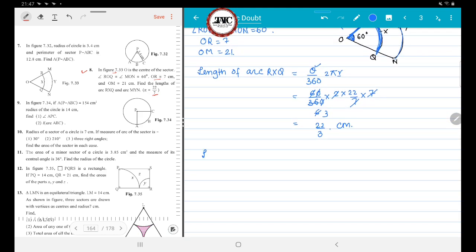Now let us see for the next part, that is length of arc MYN. It is theta upon 360 times 2 pi R. You can use another formula that is theta upon 180 times pi R. It is one and the same thing. If you reduce these two, you will get the same answer.